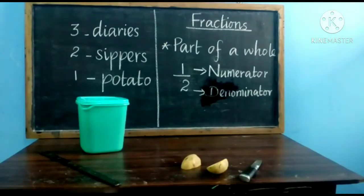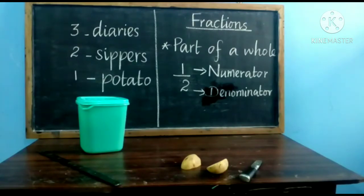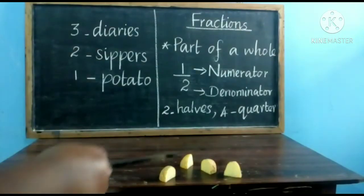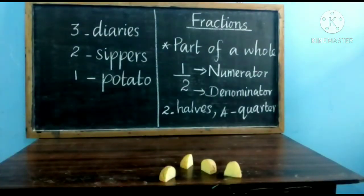In one whole object, how many halves are there? We can cut a whole potato into 2 halves. In the same way, if I cut down a potato into 4 equal pieces, then each part is called as quarter. When we cut a whole thing into 2 equal pieces, it is called as 2 halves. When we cut down into 4 equal pieces, then each part is called as quarter. So in a whole object, 2 halves are there and 4 quarters are there. Half we can write as 1 by 2, and quarter can be written as 1 by 4.